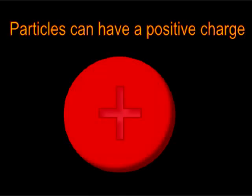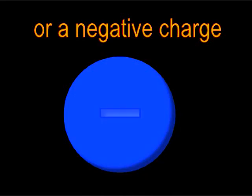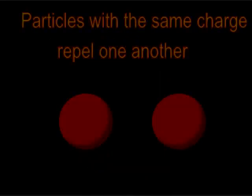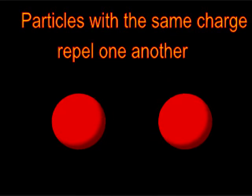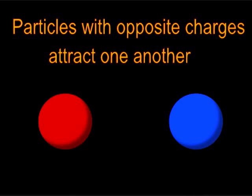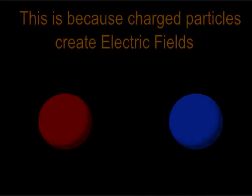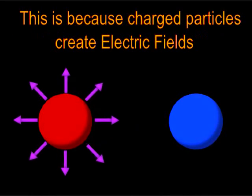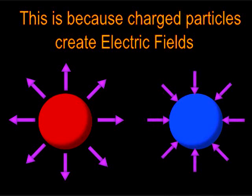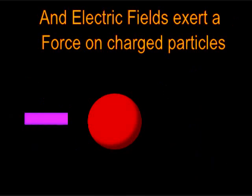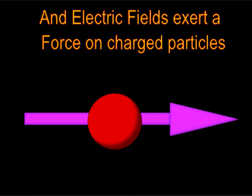Particles can have a positive charge or a negative charge. Particles with the same charge repel one another, while particles with opposite charges attract one another. This is because charged particles create electric fields, and electric fields exert a force on charged particles.